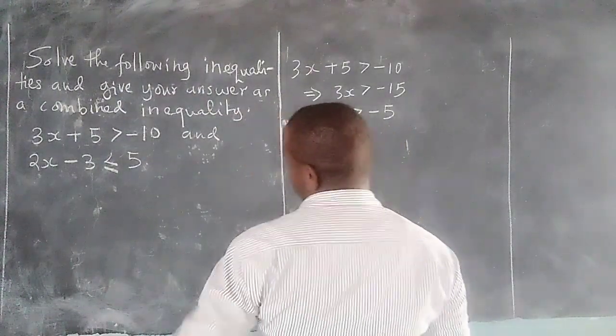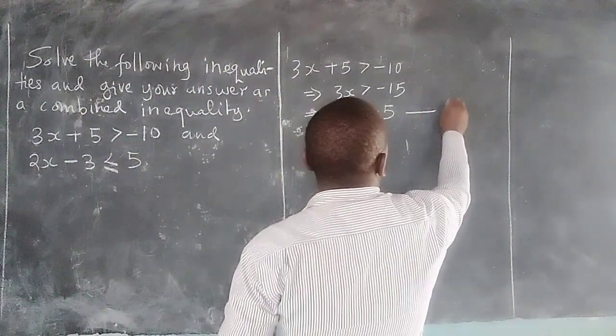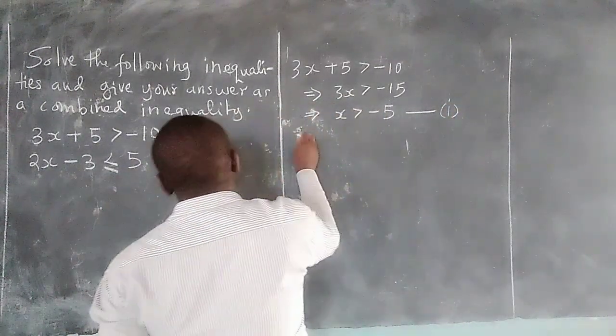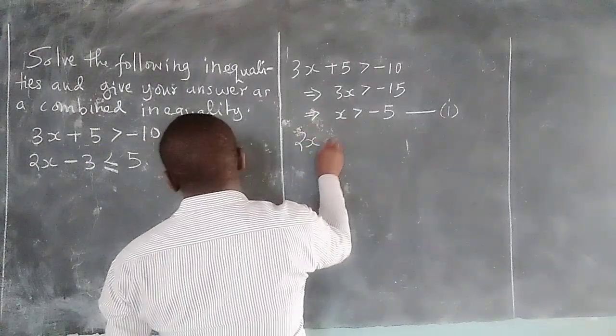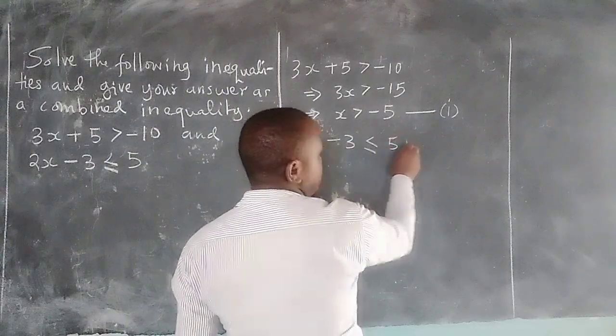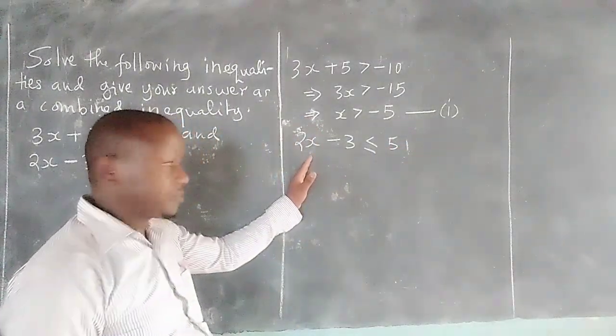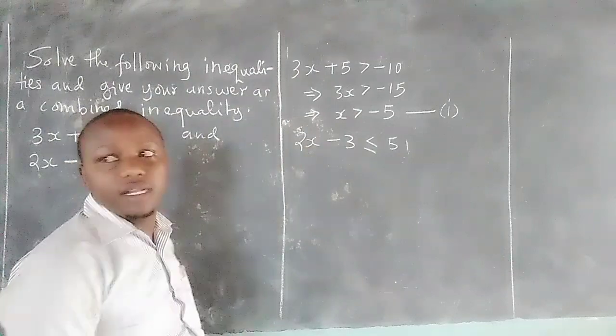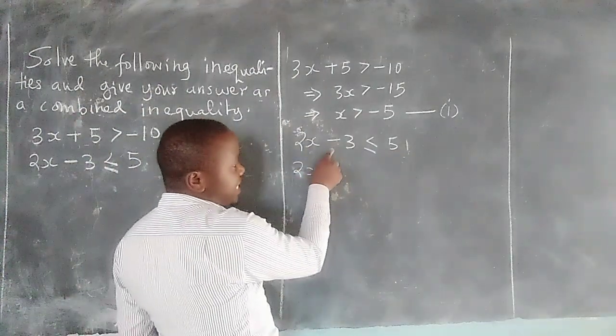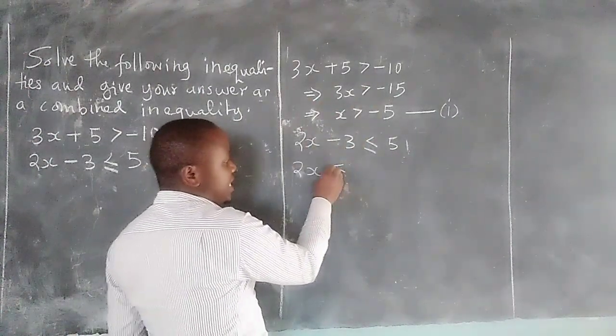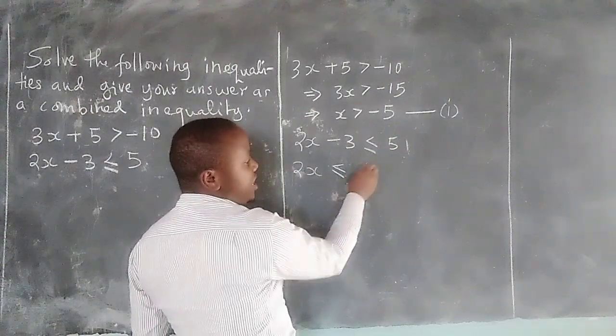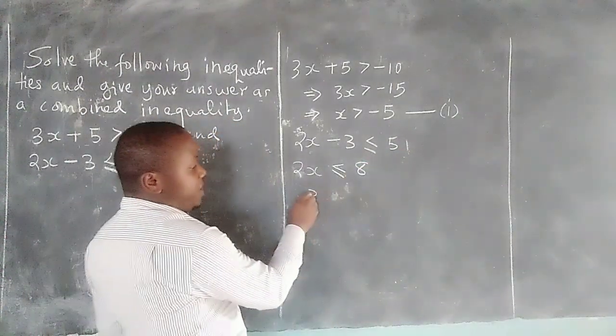The second single statement will be obtained from this where we have 2x - 3 less than or equal to positive 5, which means now in this one we will have 2x. Instead of minus 3, we take it to the other side such that minus 3 becomes positive 3 on this side.